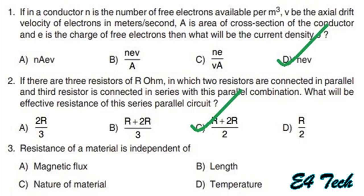Resistance of a material is independent of: length, temperature, nature of material — R = ρL/A. Therefore, resistance is independent of magnetic flux. Option A: magnetic flux.